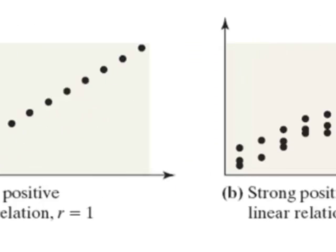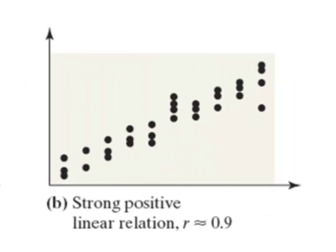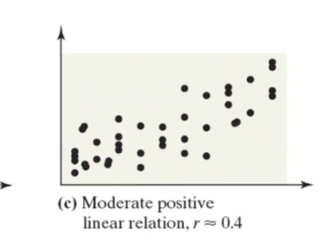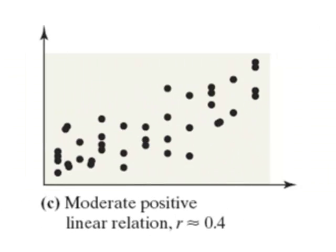Now suppose we have the same general pattern, but with somewhat more scatter in the points. Again, there's a strong linear trend in the data, but the points are no longer fitting precisely on a straight line. Now we're going to get a correlation coefficient that's again going to be positive, but it's not going to be exactly 1 anymore. In this case we might get a correlation coefficient close to 1, maybe something like 0.9. With even more scatter, we're going to get a positive correlation coefficient, but it's going to be somewhat closer to 0, maybe something like 0.4.